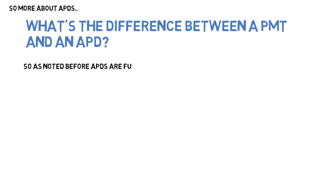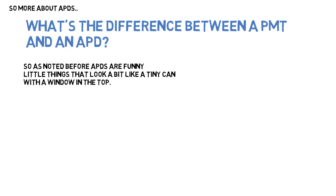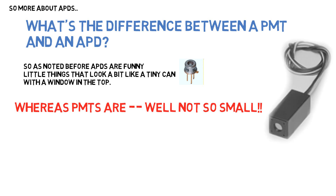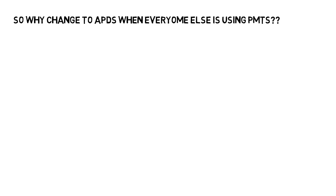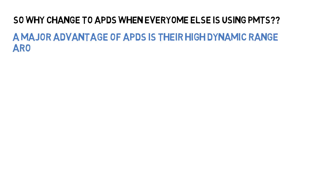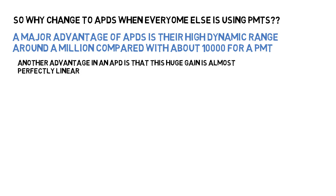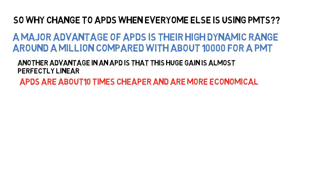What's the fundamental difference between a PMT and an APD? APDs are very small devices, often looking like a tin can with a window on the top, whereas PMTs are much bigger. A major advantage of APDs is their high dynamic range — about a million compared to about 10,000 for a PMT. Another advantage is that this huge gain is almost perfectly linear. APDs are about 10 times cheaper, maybe more, and are more economical.